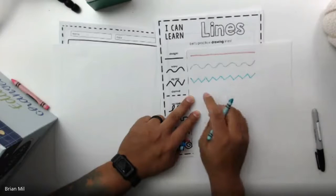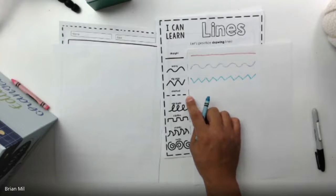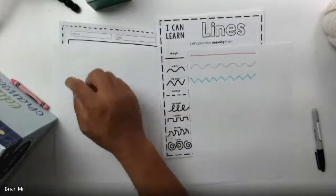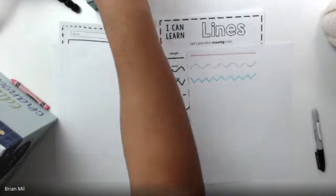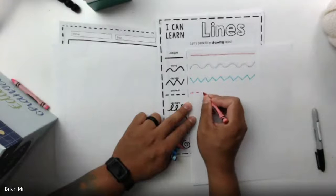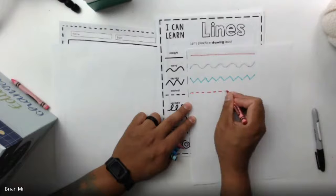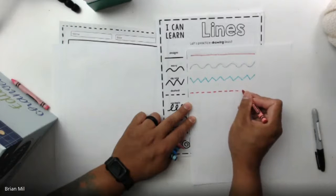All right, the next one is called dashed lines. So sometimes you see this on the edge of a paper or when it directs you to cut something on a piece of paper, or maybe on the middle of a road. Dashed lines are just kind of like small dashes, just like this. Really easy, right?